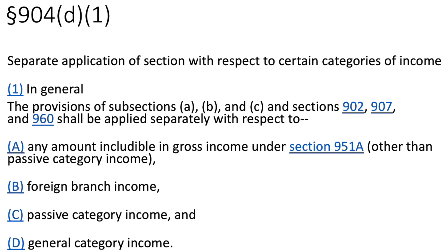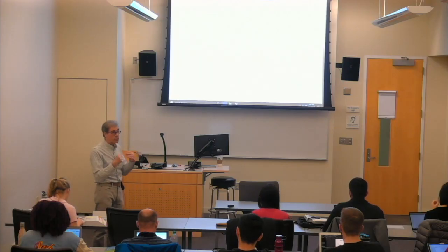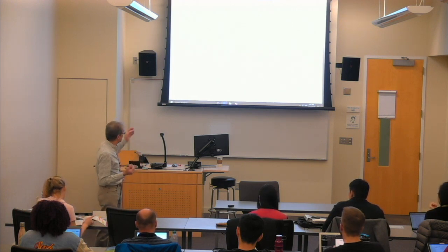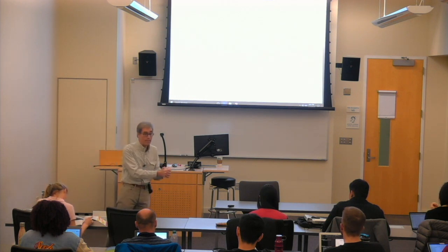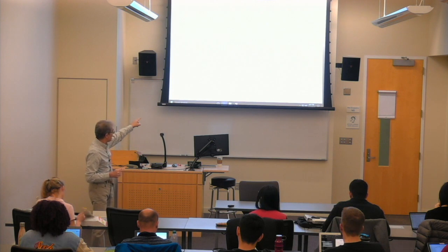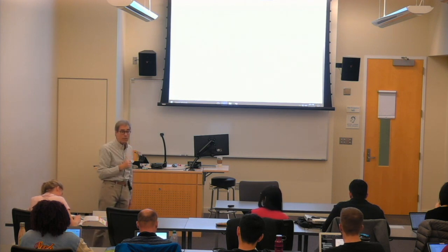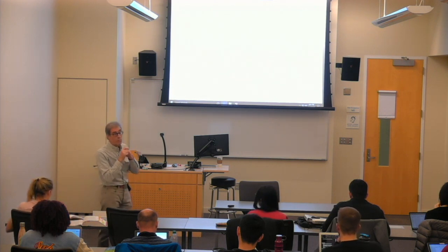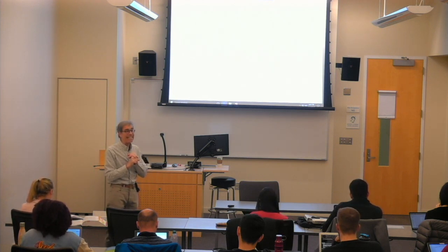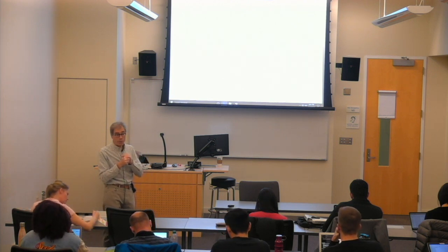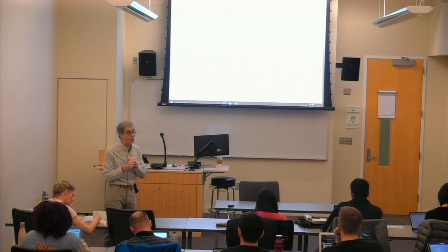Note that categories A and B — the GILTI one and the foreign branch income one — were just created in the Tax Cuts and Jobs Act; those are new. As part of that sledgehammer approach, the rules for the 951A GILTI category, found in Section 960D, tell you that the amount of foreign taxes you can claim as a credit are only 80% of the actual taxes you pay.